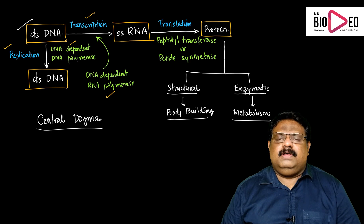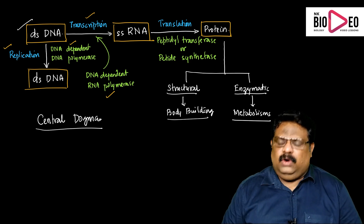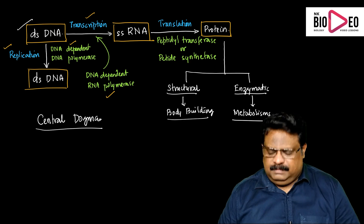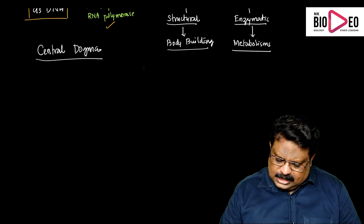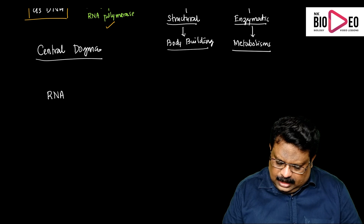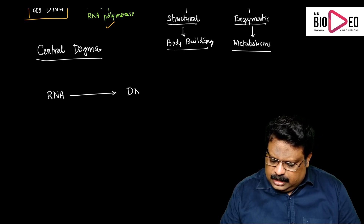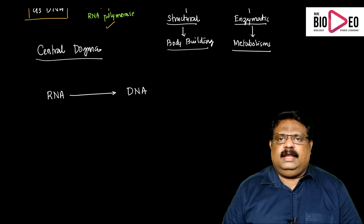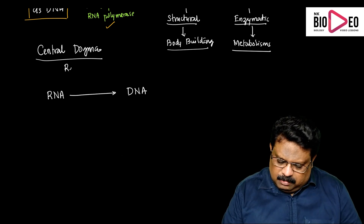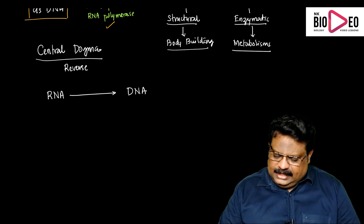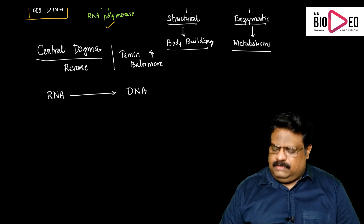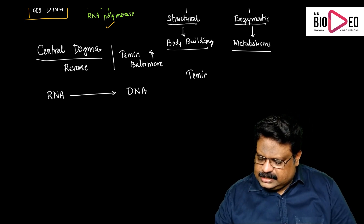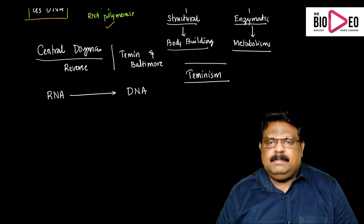One exception exists. In the case of some viruses, instead of a DNA molecule, RNA will be the genetic material. Those viruses are called RNA viruses. In RNA viruses, there is a special mechanism where the information is transmitted from RNA to DNA. This process is called central dogma reverse, and it was described by Temin and Baltimore. The central dogma reverse is also described as Teminism.